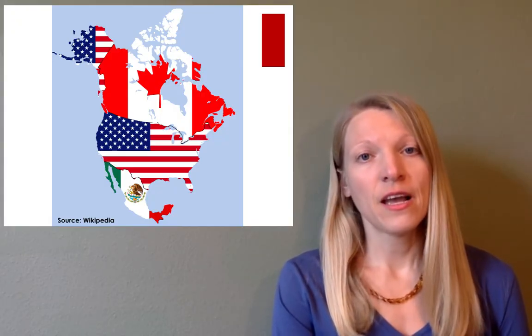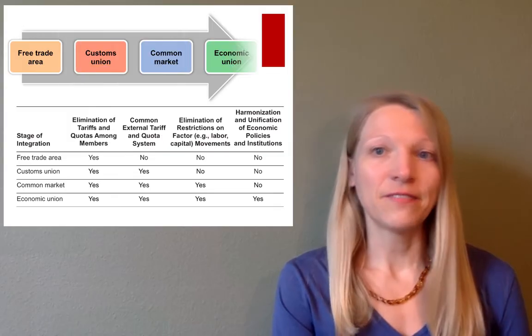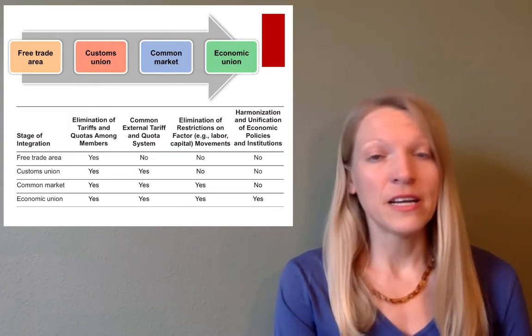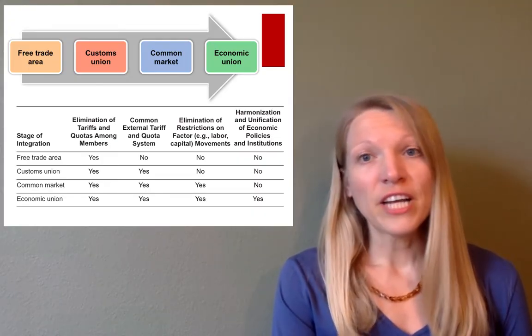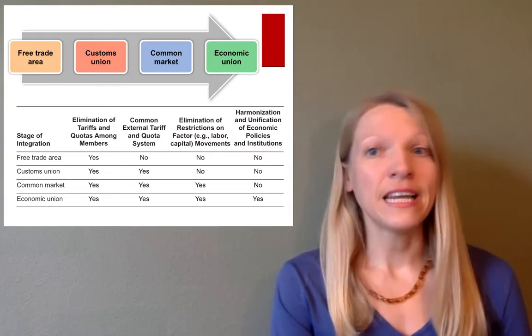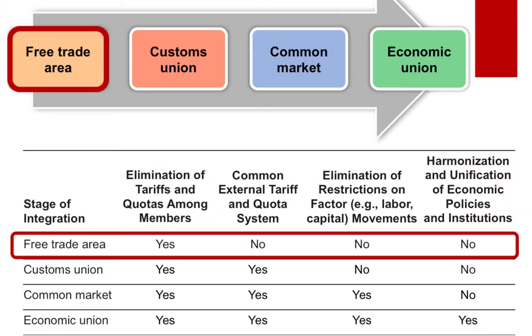For example, the United States, Canada, and Mexico are part of the North American Free Trade Agreement, or NAFTA, which was designed to expand trade between the three countries by eliminating most tariffs and quota restrictions. Some regional integration is very simple and some is very complex. The complexity can be mapped in a number of stages, and most agreements start out as free trade area agreements, such as NAFTA.